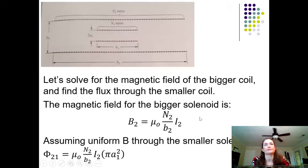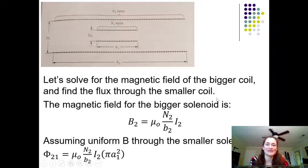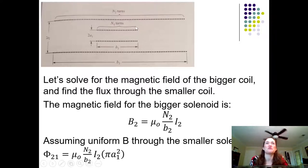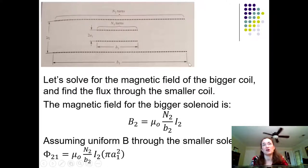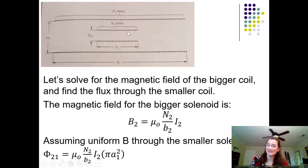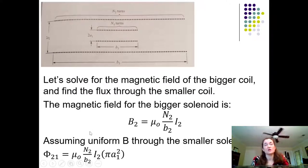Let's solve for the magnetic field of the bigger coil and find the flux through the smaller coil. For the smaller coil, the magnetic field from the smaller solenoid wouldn't be uniform through the larger coil. But if we use the magnetic field of the larger coil, we can assume it's pretty uniform where the smaller coil is. So assuming an ideal solenoid is a much better approximation here.